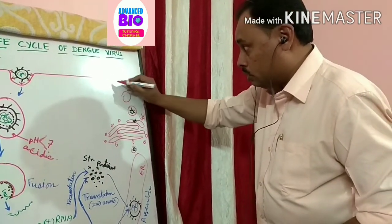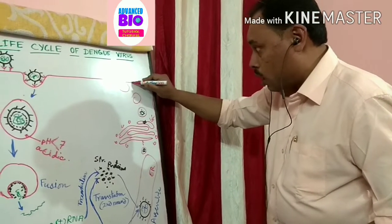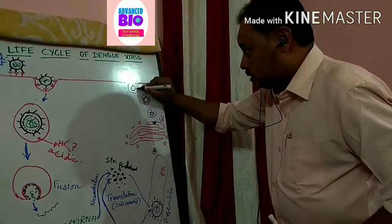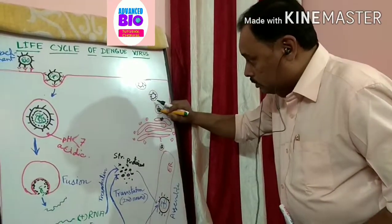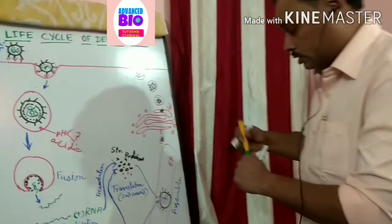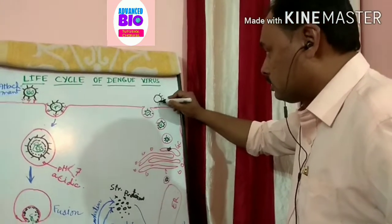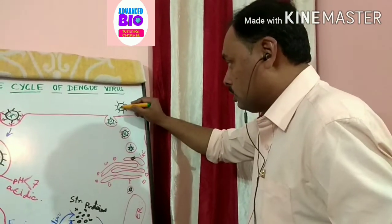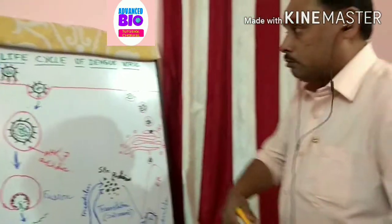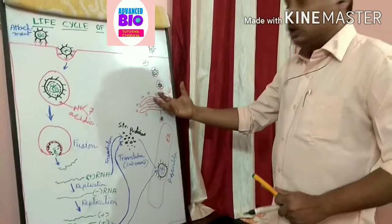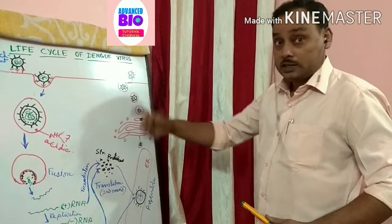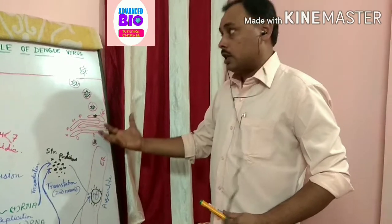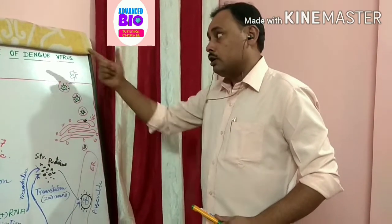The mature virus then goes to the outside of the immune cell and is released. One virus entered, and now numerous viruses are formed — that is the multiplication. This is the life cycle, or the cycle of multiplication, of dengue virus.